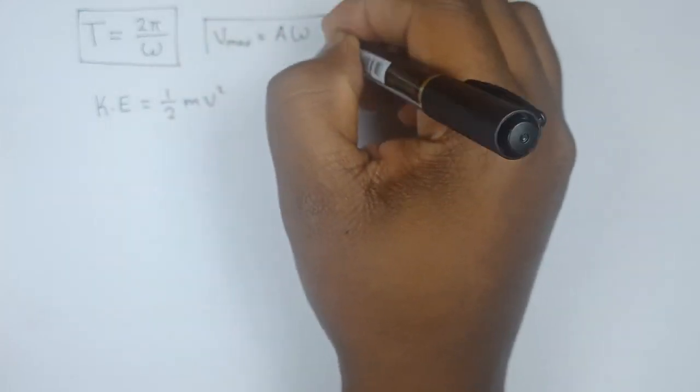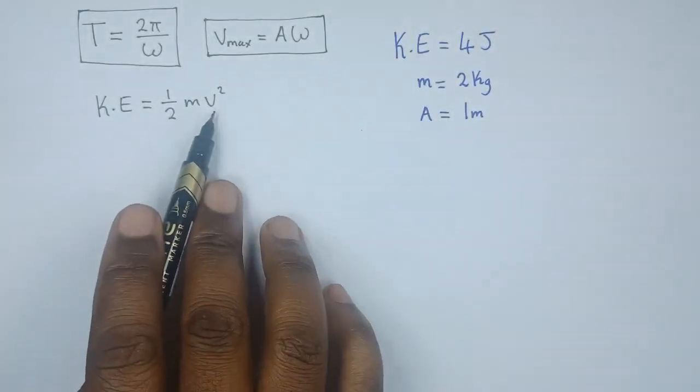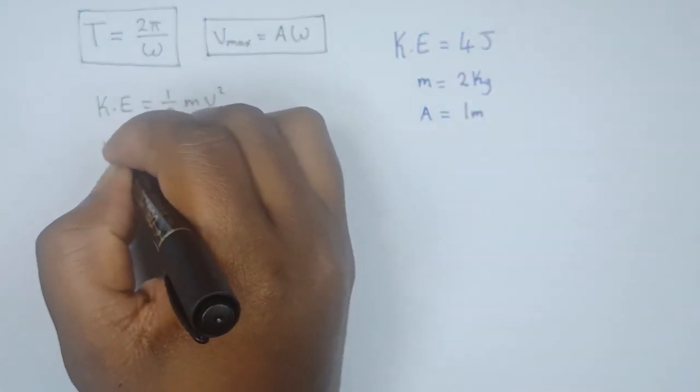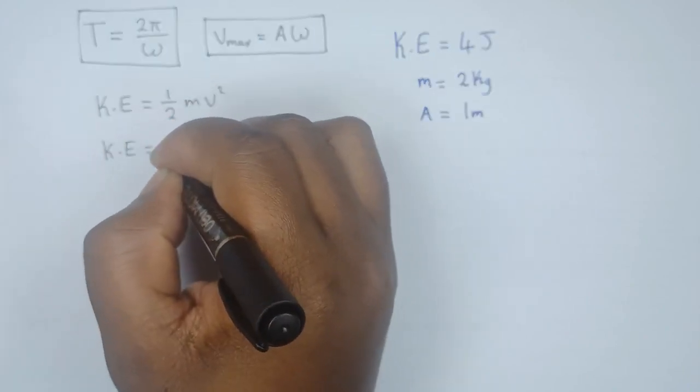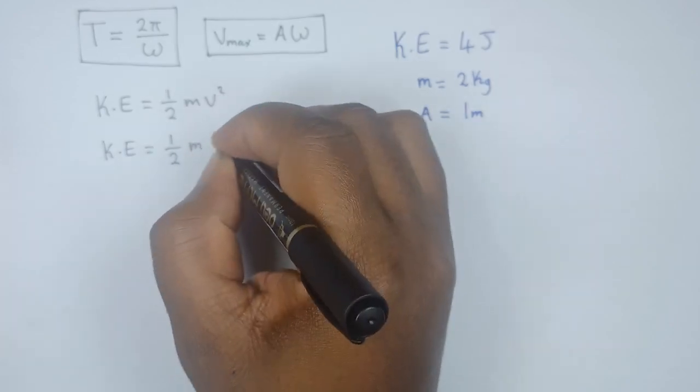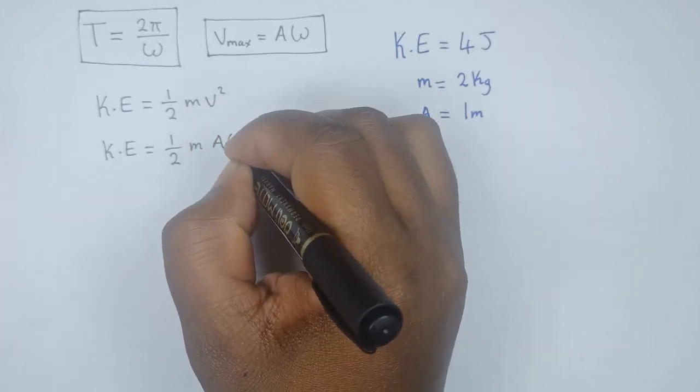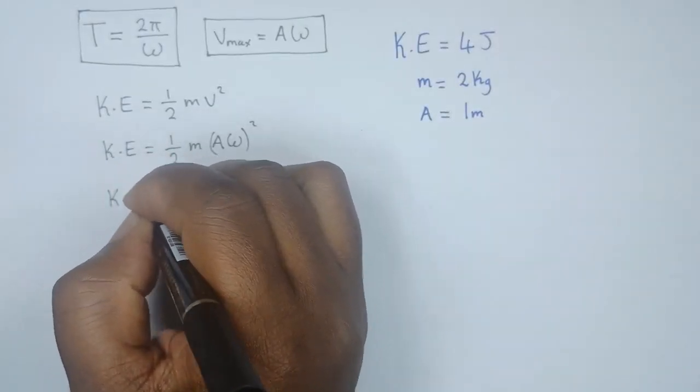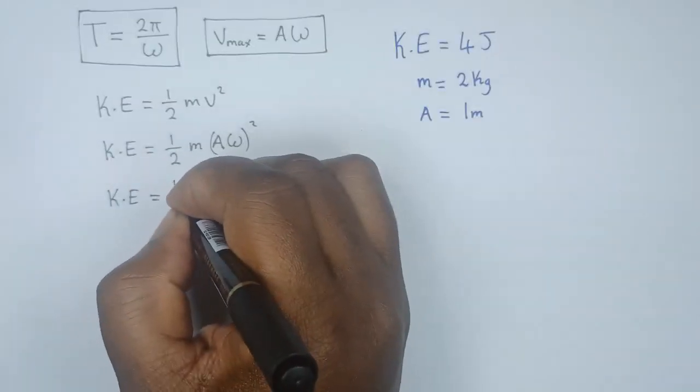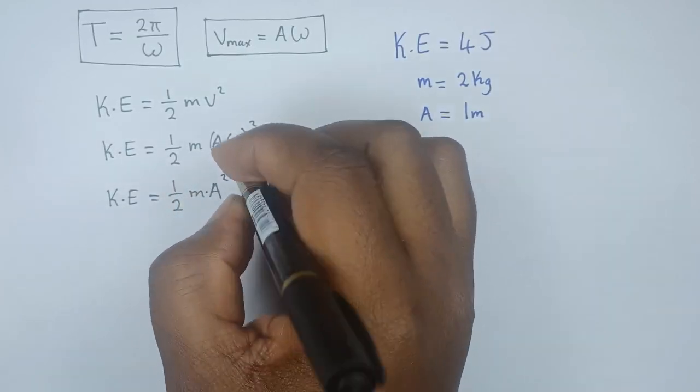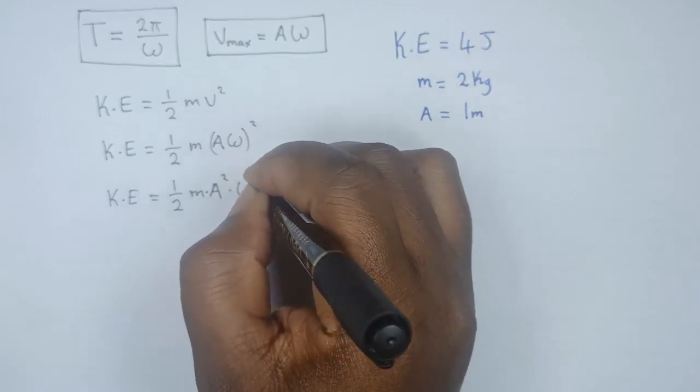Here is velocity. Let's substitute this so that we have kinetic energy equals ½m times velocity, which is A multiplied by ω. So this is as good as saying KE = ½m(Aω)², which equals ½mA²ω².